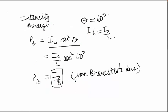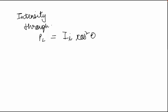So let's apply. We will say intensity through P2 will be equal to again incident intensity times cos square theta. So here we know that the theta would be 30 degrees and incident intensity would be equal to I0 by 8.